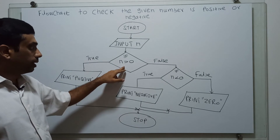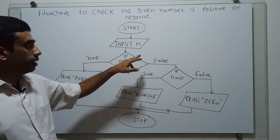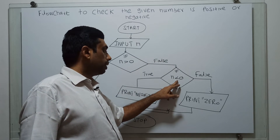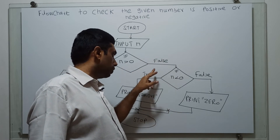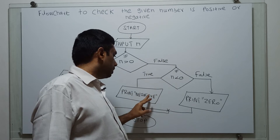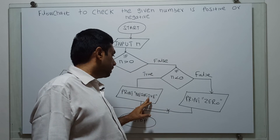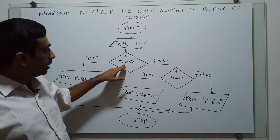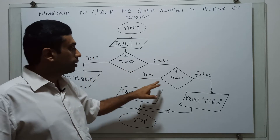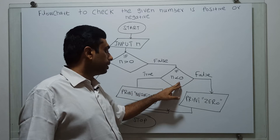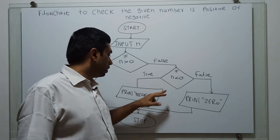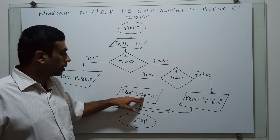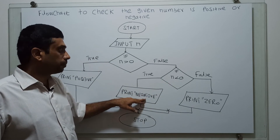If n greater than 0 is false, I am checking n less than 0. If it is true, I am printing n is negative. So n greater than 0 is false, n less than 0 is true — in this case, it is a negative number. Print negative.